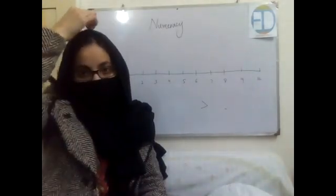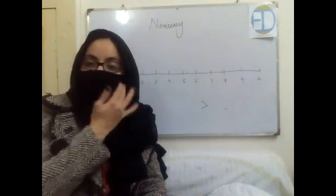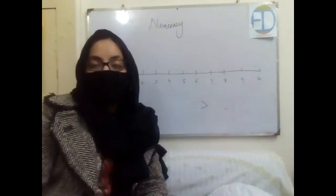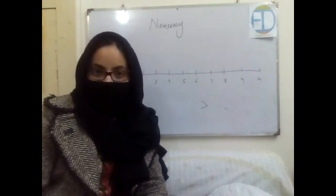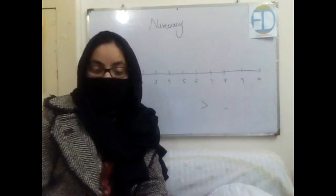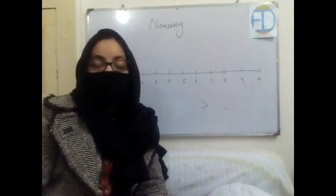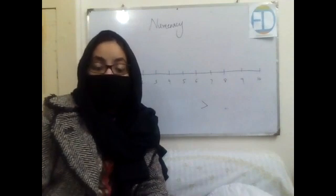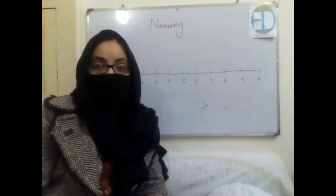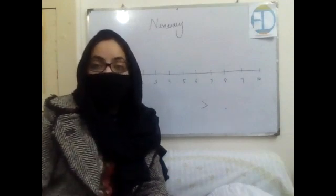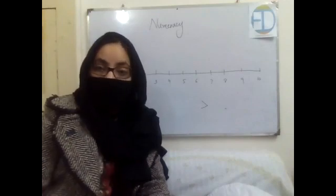Let's do a small mental math activity. You have to answer these questions quickly and also give the spellings in words. What comes before five? Four — spellings: F-O-U-R, four, excellent! What comes after seven? Eight — spellings: E-I-G-H-T, eight.